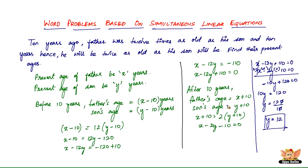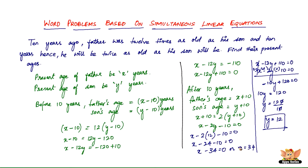Now, what is the father's age? We just substitute the value of Y in one of the equations to find the father's age. Substituting Y in the second equation, we get X minus 2 times 12 minus 10 equals 0. So X minus 24 minus 10 equals 0, which gives X minus 34 equals 0, or X equals 34. The present age of the father is 34 years, and the present age of the son is 12 years.